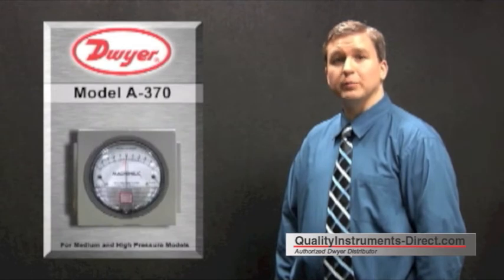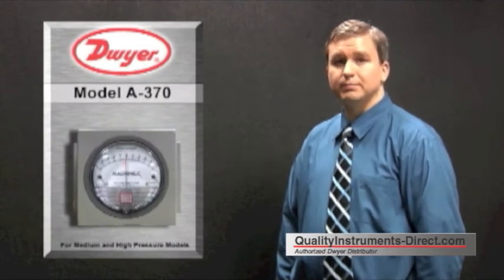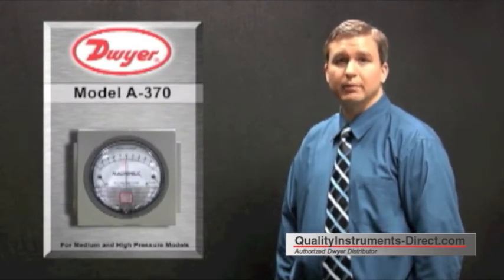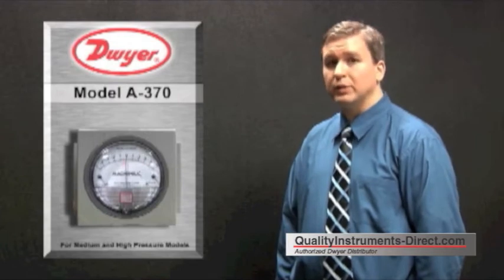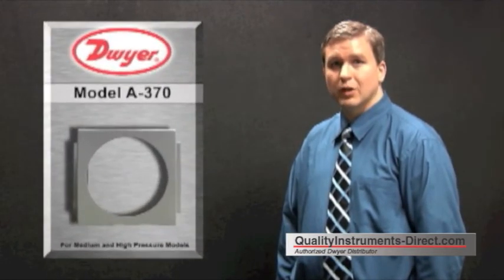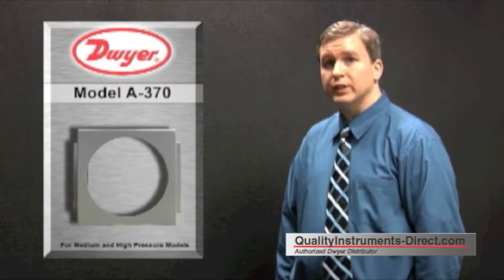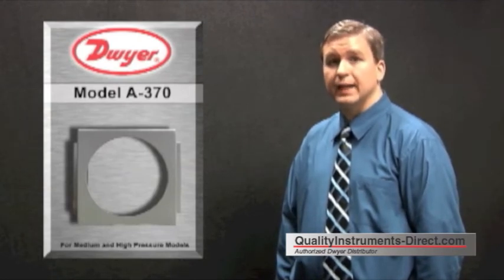For high pressure or medium pressure Magna Helic gauges, these gauges have a larger diameter and will not fit in the opening of the A-299 bracket. The required bracket for these versions is the model A-370 surface mounting bracket.